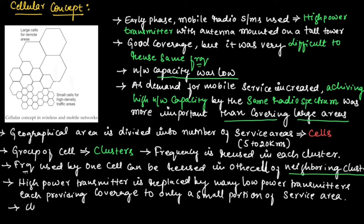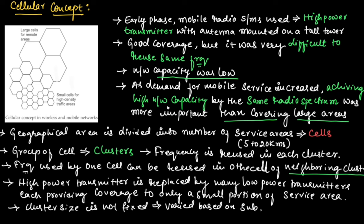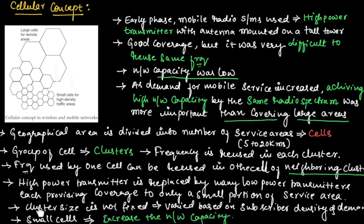In frequency reuse, the cluster size is not fixed — it can vary based on subscriber density and demand. Using small cells helps in frequency reuse and increases the network capacity. Small cells are used in high density traffic areas, as you can see in this diagram, which increases network capacity.